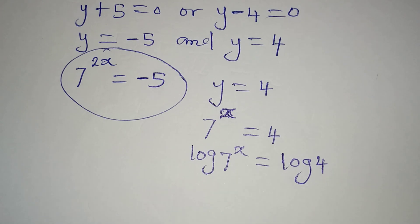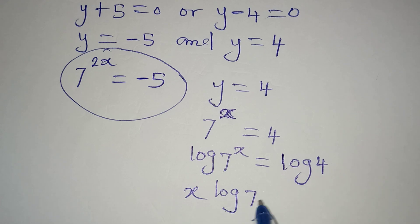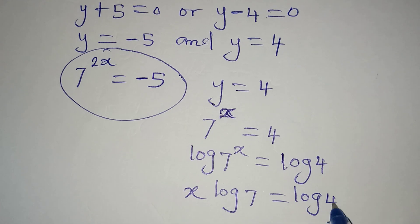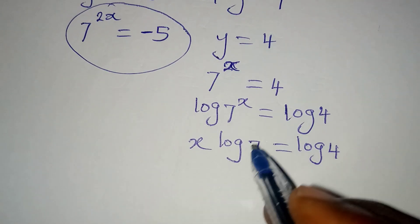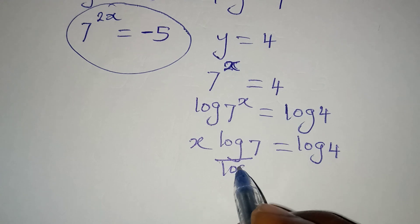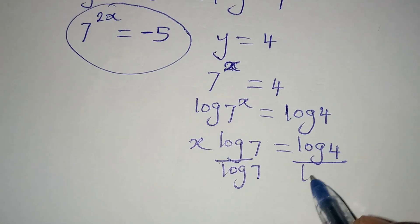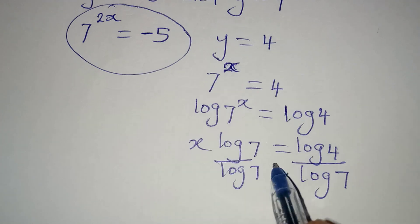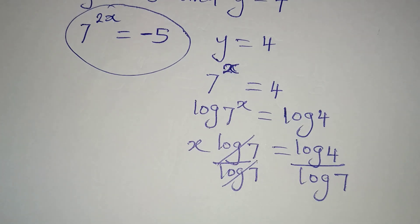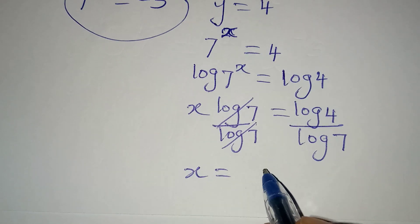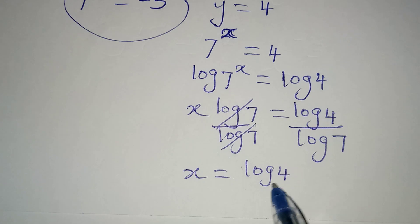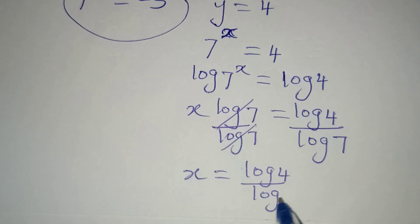Now take x to the front, and we're going to have x log 7 to be equal to log 4. And at this point, I can divide both sides by log 7. This can cancel, and we can now say that x is equal to log 4 over log 7.